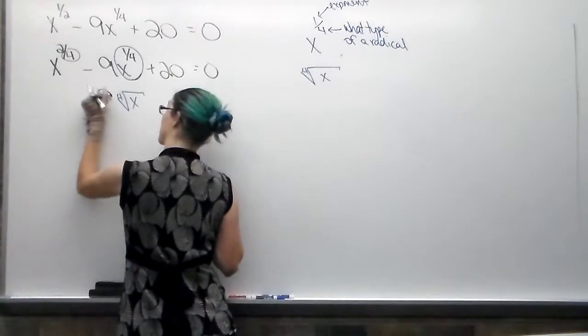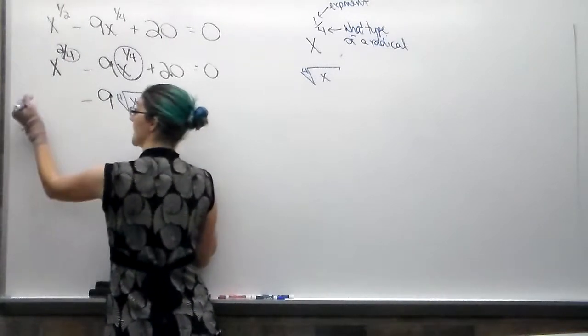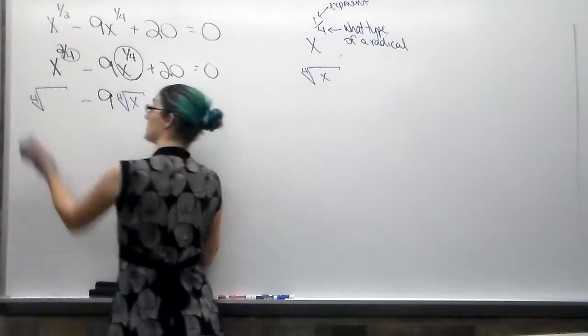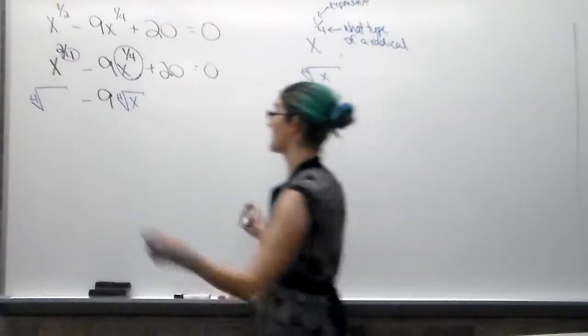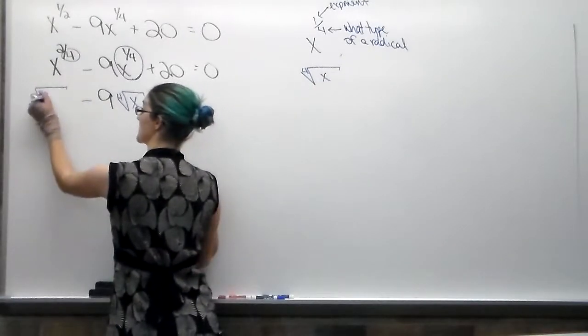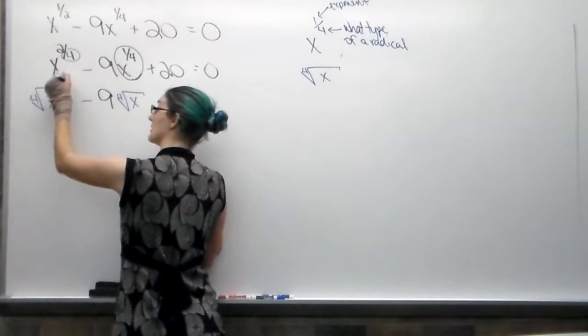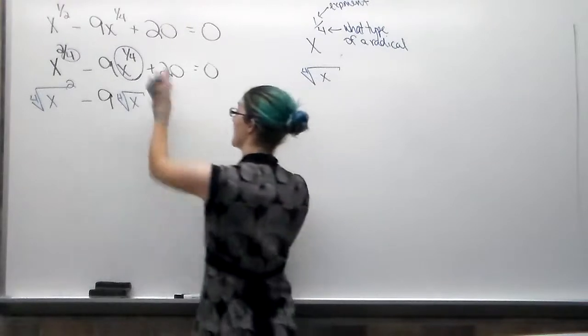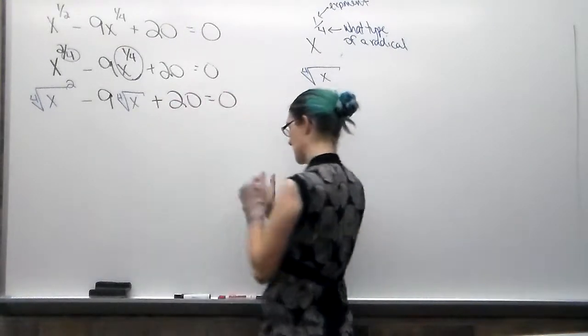So this one is going to be the fourth root of x. I've still got the negative 9 in front of it. For x to the 2 fourths, the denominator tells us that it is a fourth root. The base of the exponent is what goes inside, and the numerator stays as an exponent. Plus 20 doesn't have anything weird on it, so it just falls. Equals 0.